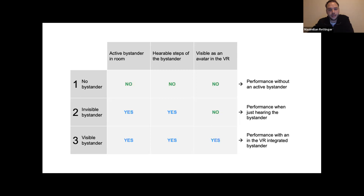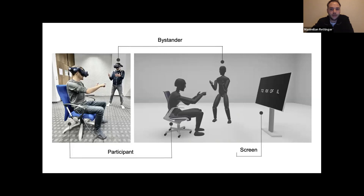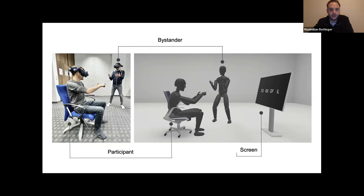The visible-bystander condition extended the invisible-bystander condition by visualizing the bystander and including their movements as an avatar in VR. The participants' and bystander's arm, finger, and head movements were at the same position virtually and physically, similar to the chair. Movements were stabilized with an inverse kinematic technique and synchronized. In the invisible-bystander condition, no bystander was visible in the VR view. In the no-bystander condition, no bystander was visible in either real or virtual images.